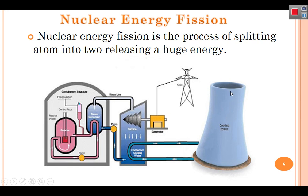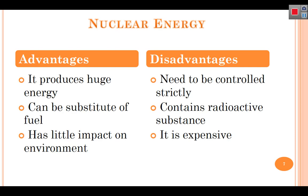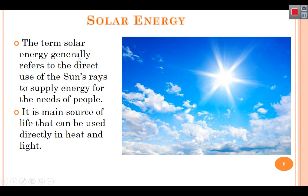In the process of nuclear energy, advantages and disadvantages can occur. Advantages include producing huge amounts of energy, being able to replace fossil fuels, and having little impact on the environment if controlled correctly. Disadvantages include needing to be controlled strictly, producing radioactive waste that can harm human beings, and the plant being very expensive to build.